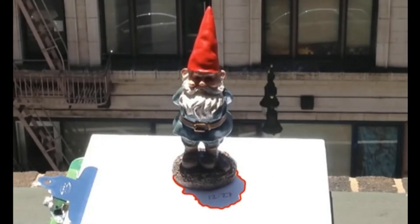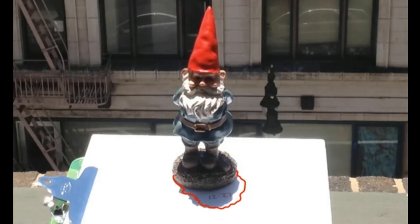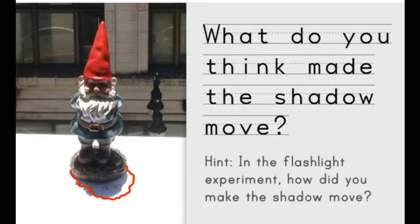Watch this video of our experiment. This video has been sped up so that 20 minutes goes by in just 20 seconds. Discuss this question: what do you think made the shadow move? Hint — in the flashlight experiment with Ashton, how did he make the shadow move? What do you think, first graders?